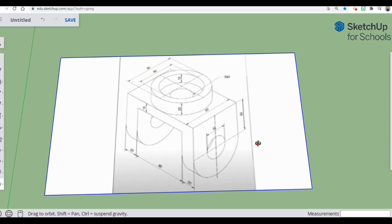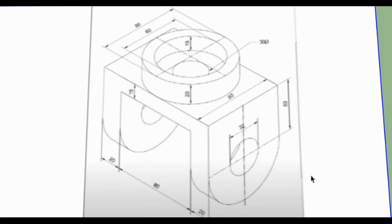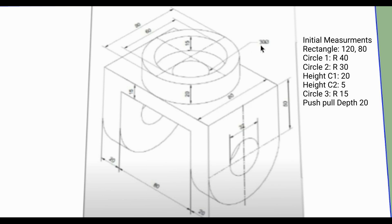We're going to scroll in and look at what we're going to be drawing. This is the structural part and all of the measurements. For the main rectangle, it's 80 and then you have side pieces of 20 plus 20, so that's going to be 120, with a width of 80. Also notice that all of our circles have diameters, so to get the radius — which is what you need in SketchUp — it's always going to be half of the diameter listed.